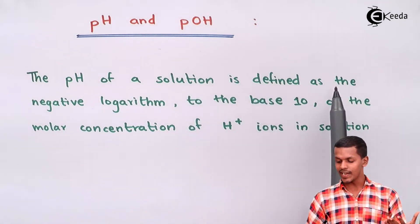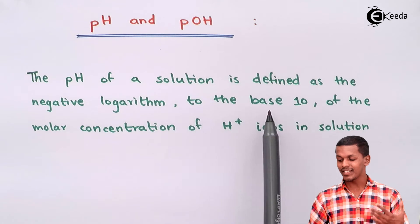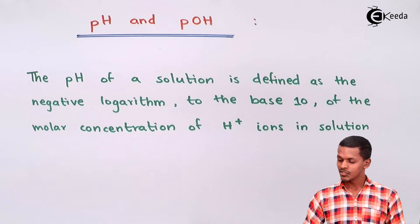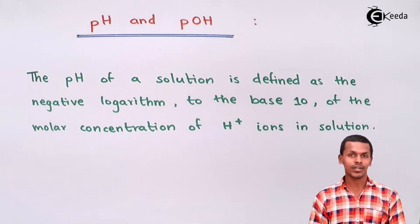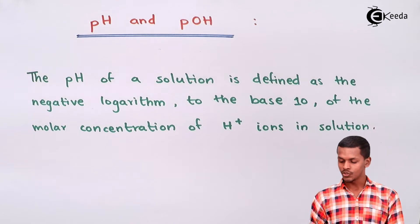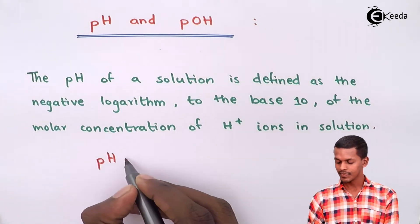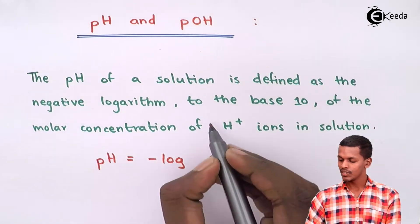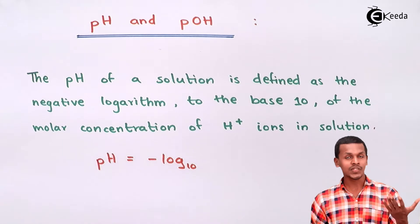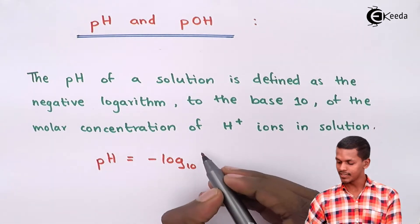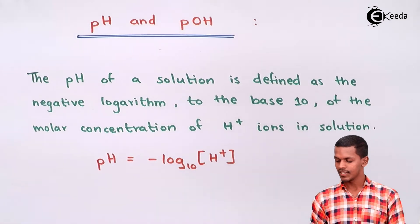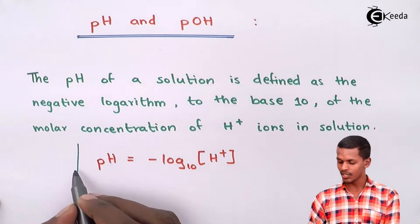The pH of a solution is defined as the negative logarithm to the base 10 of the molar concentration of H+ ions in the solution. The mathematical expression is: pH = -log₁₀[H+]. This is the mathematical expression of pH.